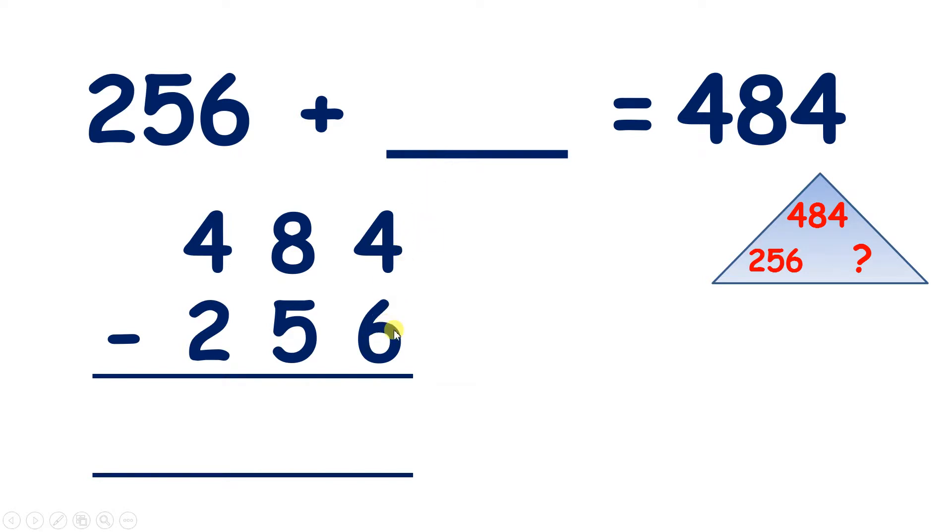So we start with the units. We have 4, so we can't take away 6. So let's change 8 tens to 7 tens, and now we have 14. So 14 minus 6 is 8. Then we can move on to our tens, and we have 7 minus 5, which is 2. And then on to our hundreds, we have 4 minus 2, which is 2. So our missing number is 228.